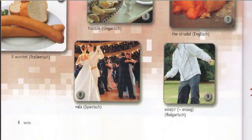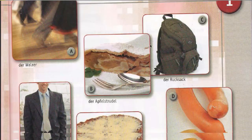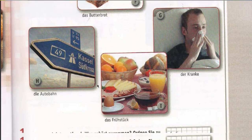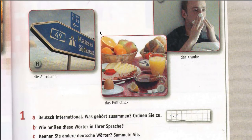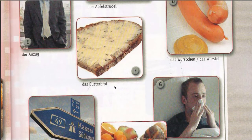Now we are going to start the first exercise. 'Guten Tag.' Chapter one — Deutsch International, German International. 'Was gehört zusammen?' — What belongs together? Just order them. For example, number one picture F: it is related to 'Das Butterbrot', a sandwich. The example is given as number one with F.